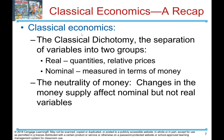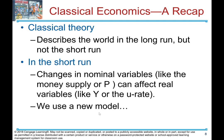Let's recap classical economics: the classical dichotomy separates variables into two groupings — real quantities and relative prices versus nominal variables measured in terms of money. The neutrality of money holds that changes in the money supply affect nominal but not real variables. Classical theory describes the world in the long run, but not in the short run. In the short run, changes in nominal variables like money supply or price level can affect real variables like output or unemployment, so we use a new model.